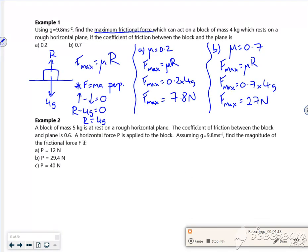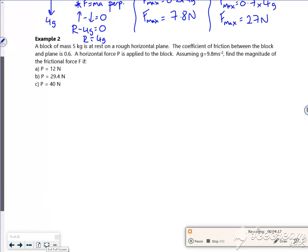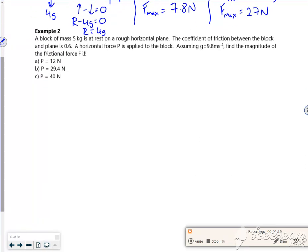Right, let's have a look at example two then. Why did you do that? Give me my head in. So it says, example two says a block of mass 5 kilos,